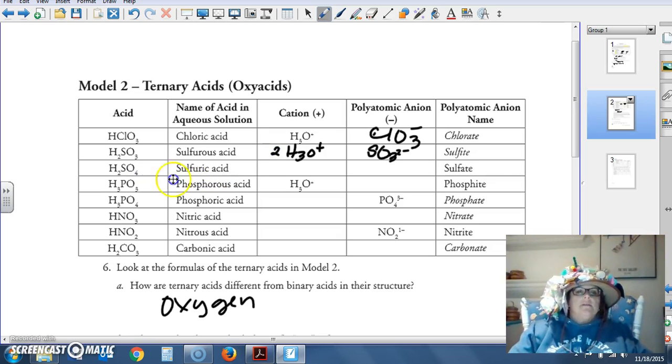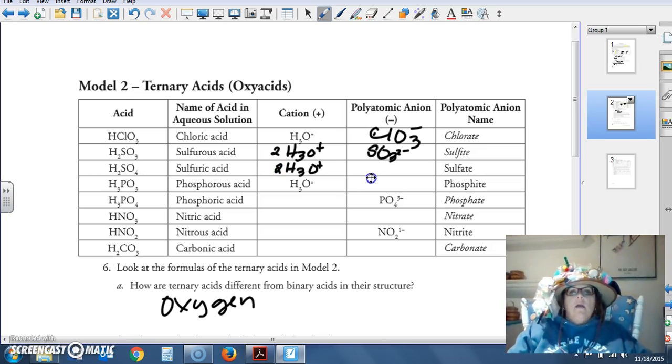Sulfuric acid. Once again, we're going to have two hydrogens, so two hydronium ions. And sulfuric is SO4, negative two, or sulfate.